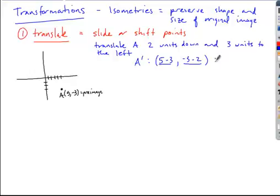And so our new set of coordinates are going to be five minus three or two, negative three minus two, which is negative five.